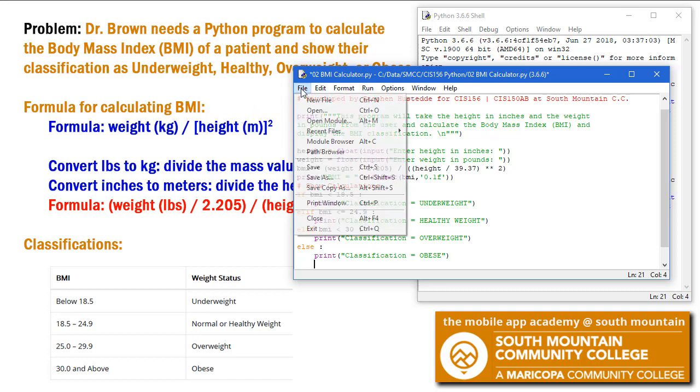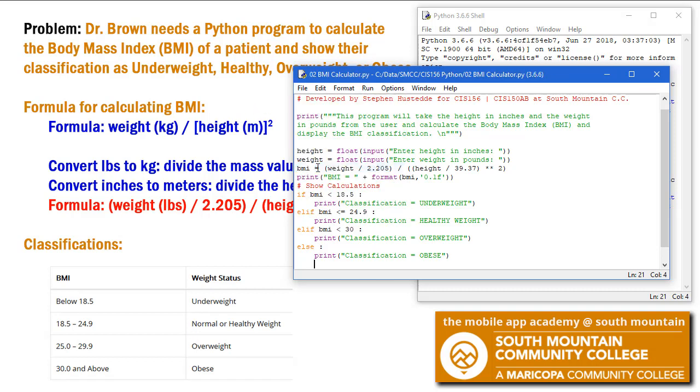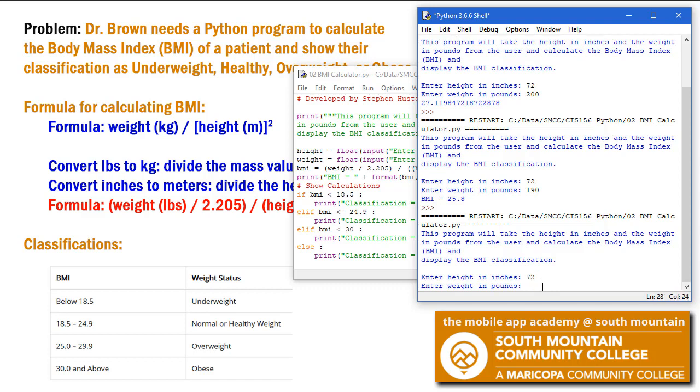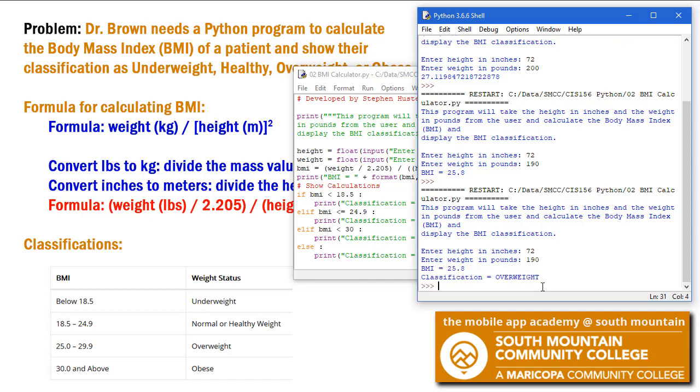So I'm going to save this. And I'm going to run. So before we did 72 and 190, we've got 25.8, which would be overweight by our classification standards. Let's just run this again and see if we get that 72, 190. And we're told BMI is 25.8 and the patient is overweight.